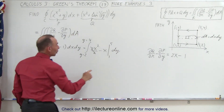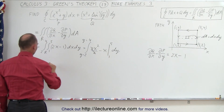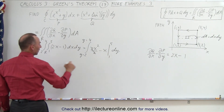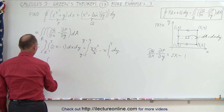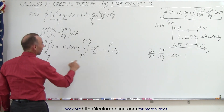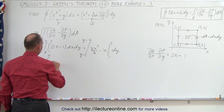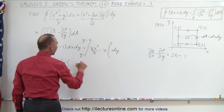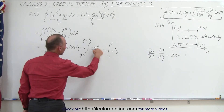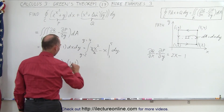We have both the upper and lower limits to contend with. Plugging in the upper limit x equals 5 gives us 25 minus 5, and subtracting the lower limit x equals 1 gives 1 minus 1, which goes to zero. That leaves us with 20, and we still have a dy.